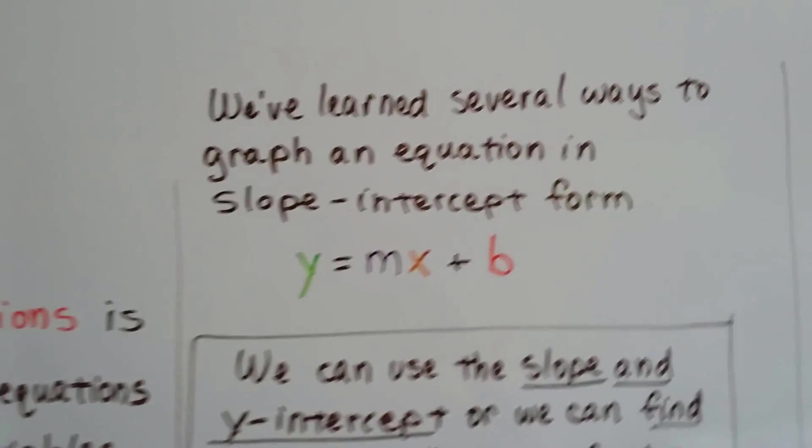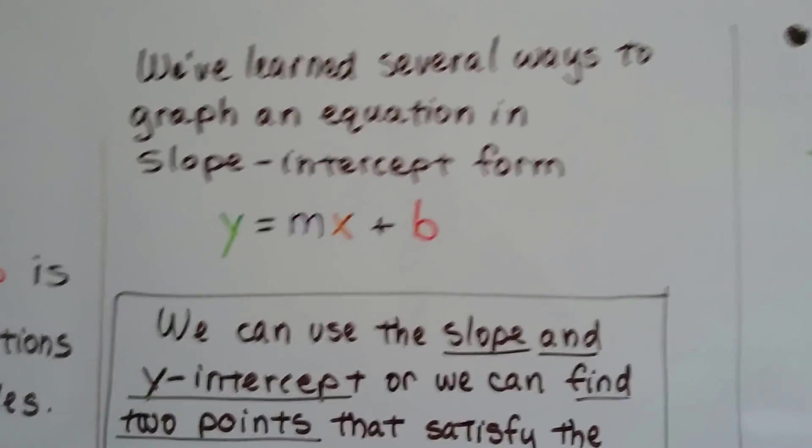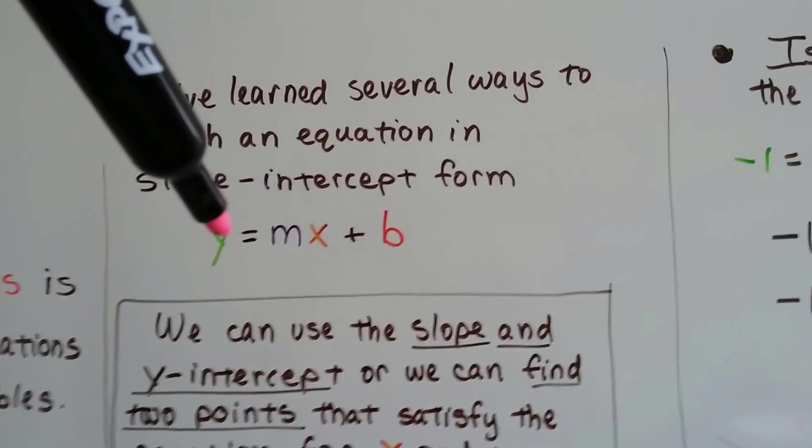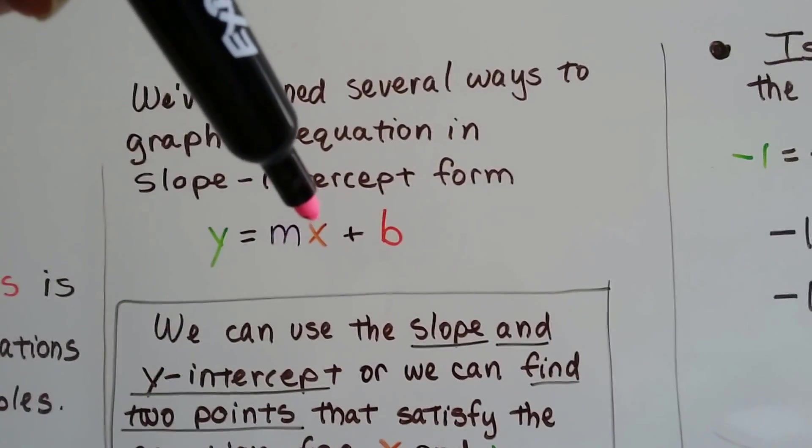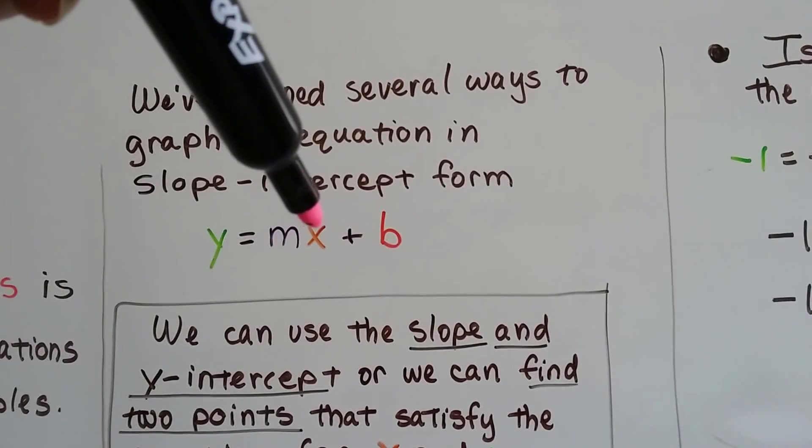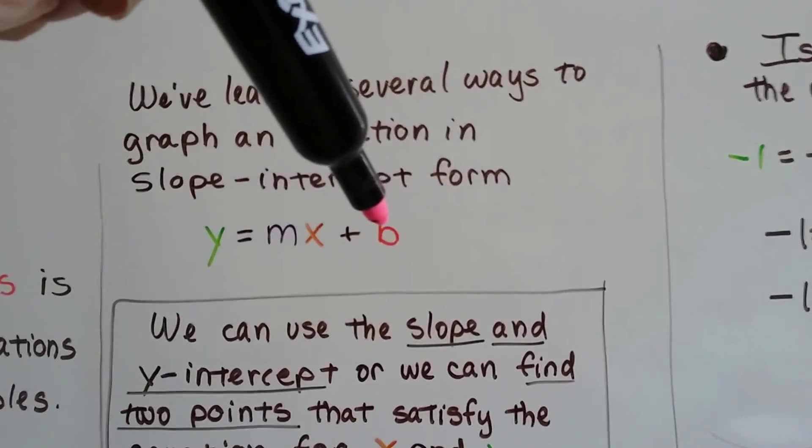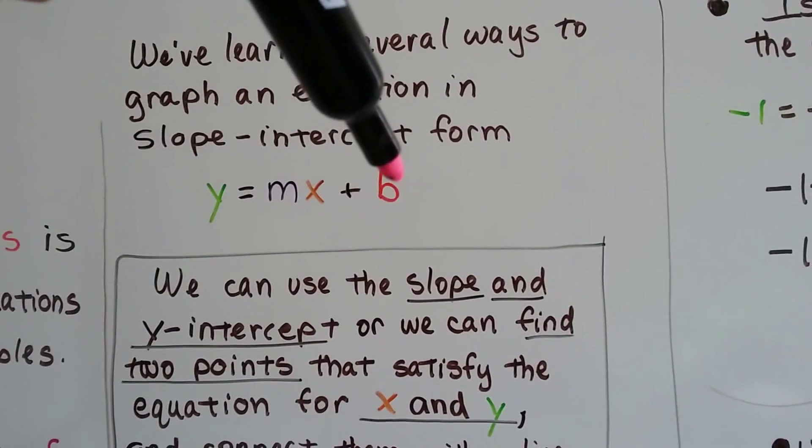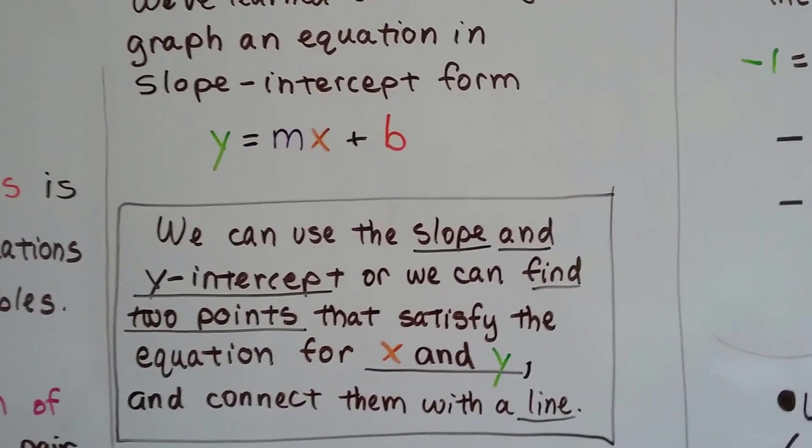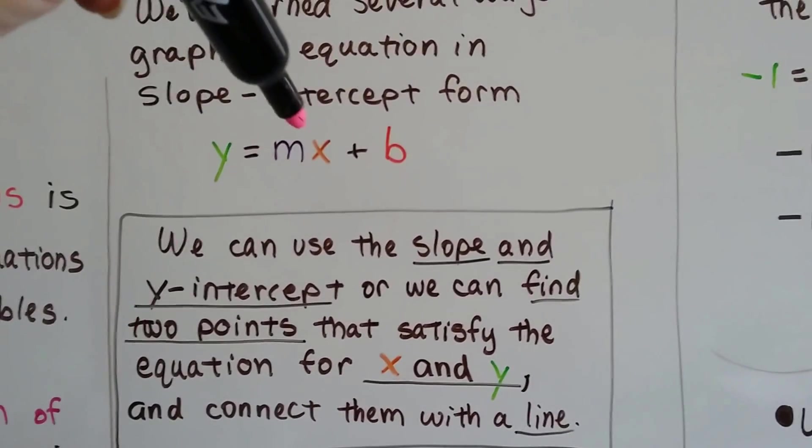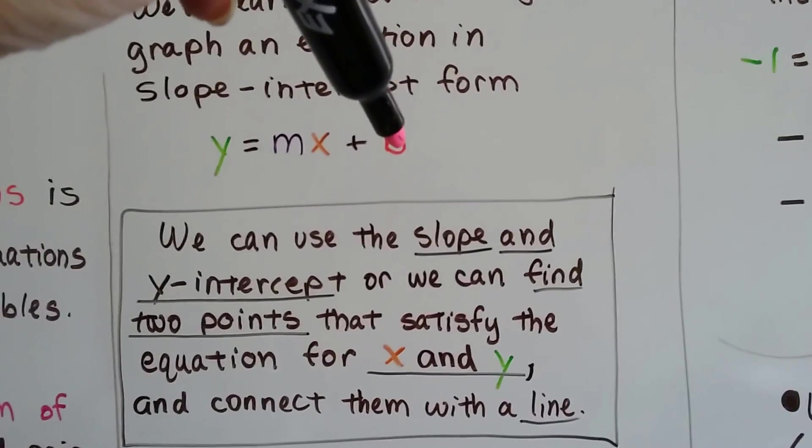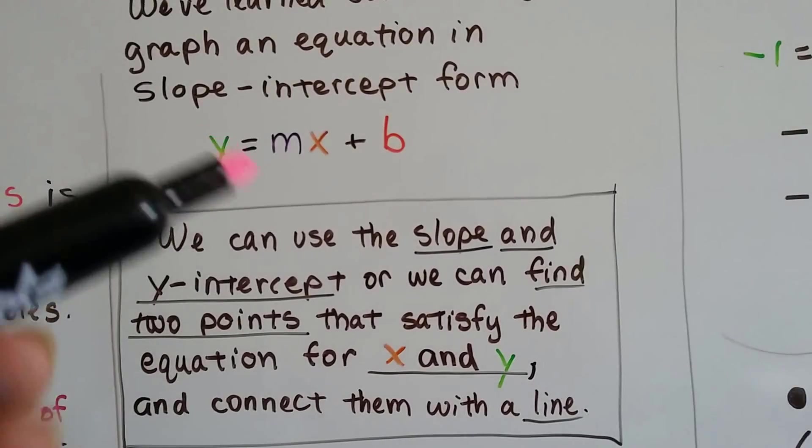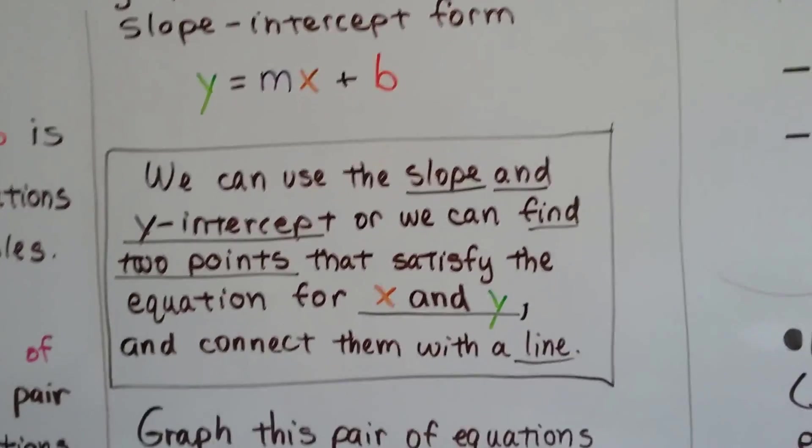So we learned several ways to graph an equation in slope-intercept form. You remember our colorful y equals mx plus b. This is the y value, m as the slope, x is the x value in the ordered pair, and b is the y-intercept. It's where it hits the y-axis line. We can use the slope and y-intercept, or we can find two points that satisfy the equation for x and y and connect them with a line.